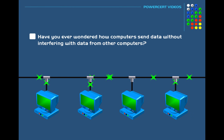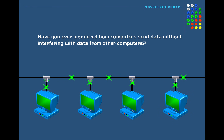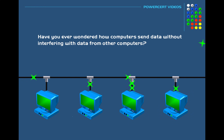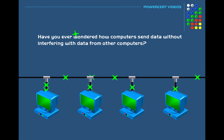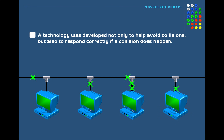Have you ever wondered how computers send data on the network without interfering with the data from other computers, especially if the network has a lot of computers sending and receiving data at the same time? You would think that there would be a lot of collisions happening, with data packets constantly smacking into each other. But even though collisions do happen from time to time, especially on older networks, a technology was developed to not only help avoid collisions, but also to respond correctly if a collision does happen.